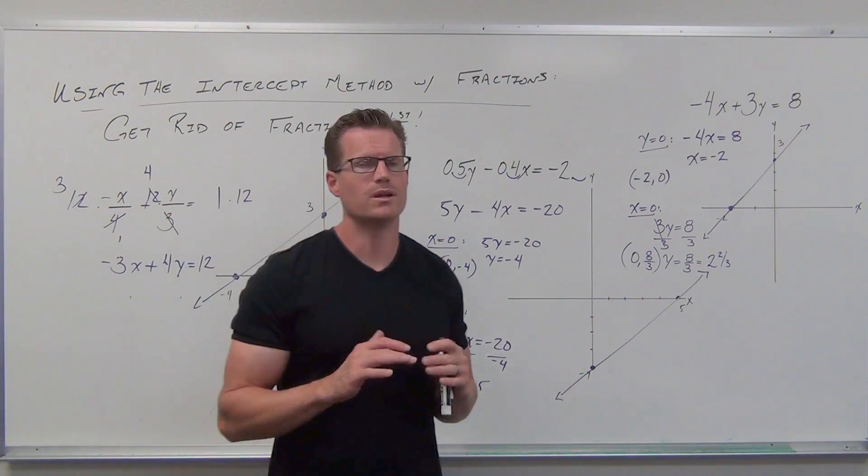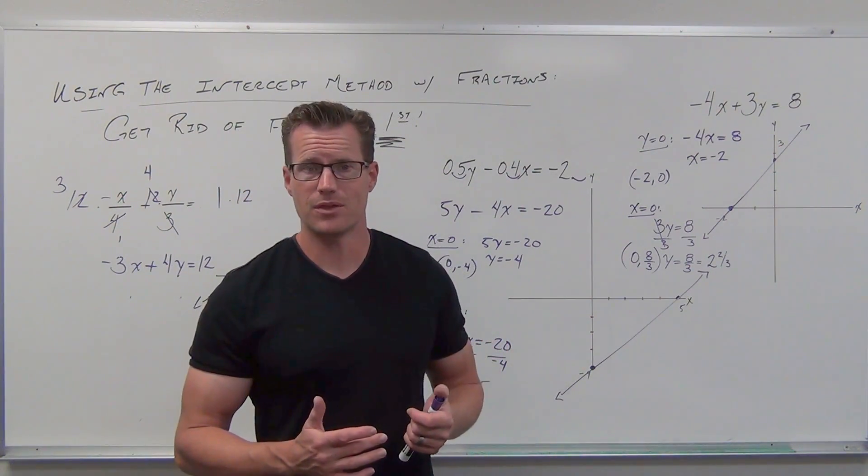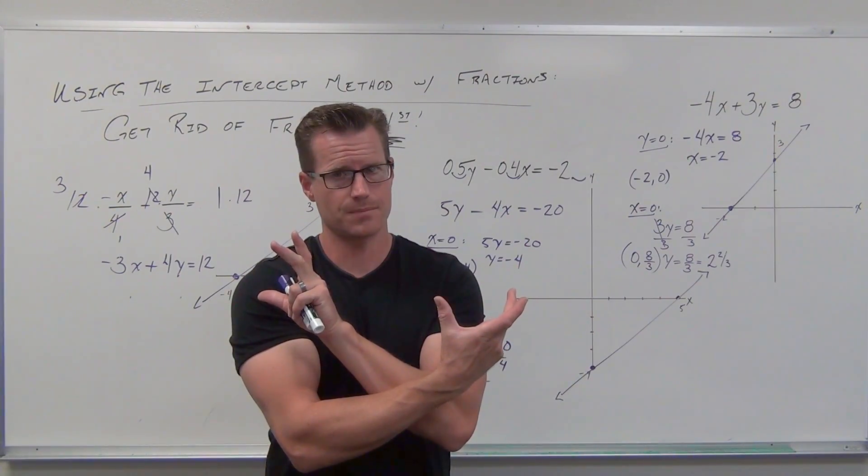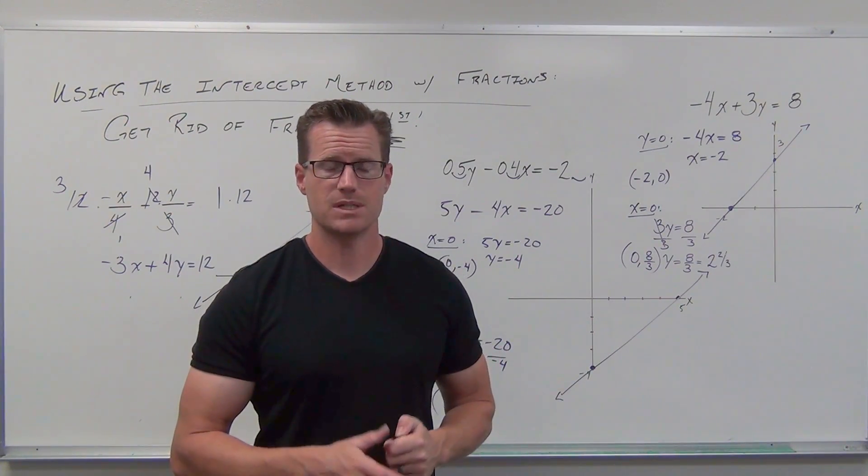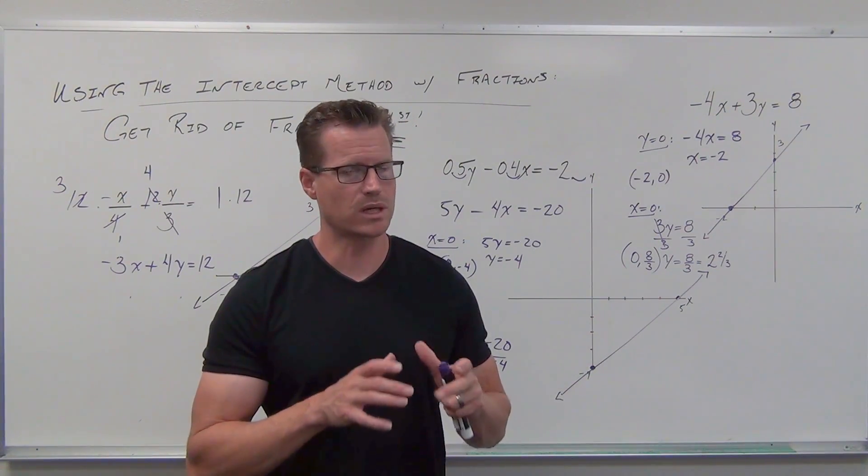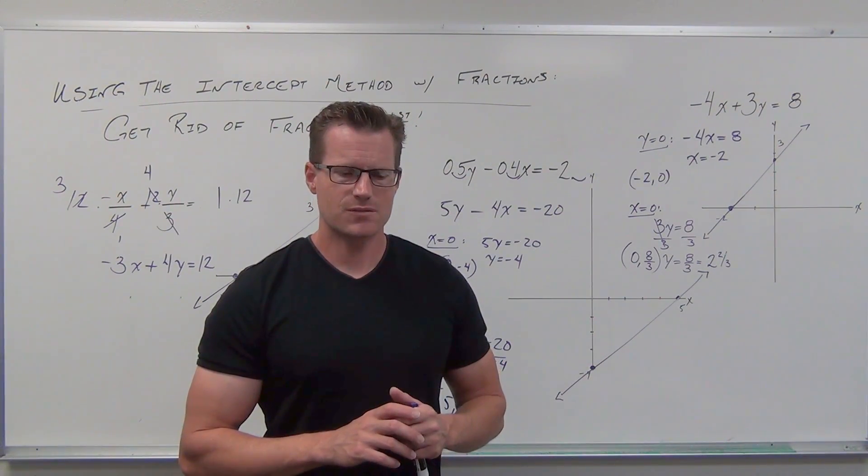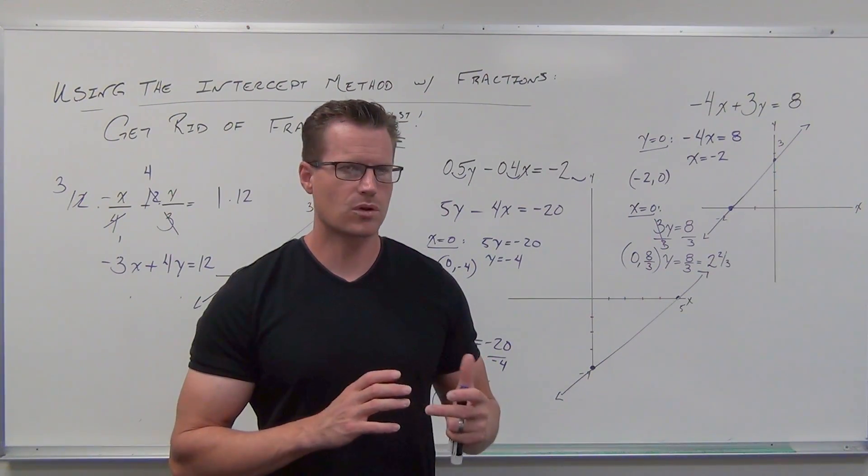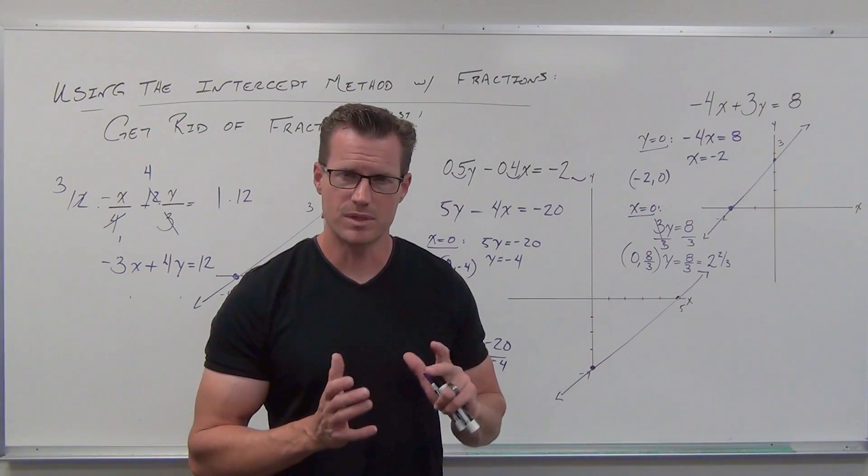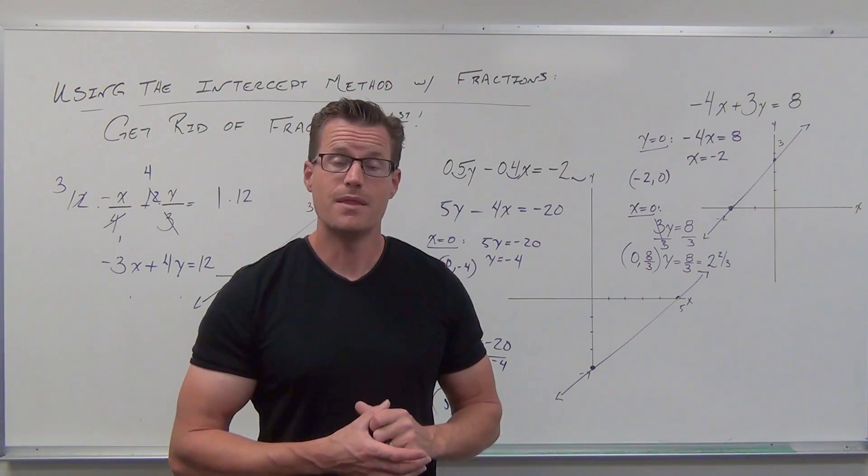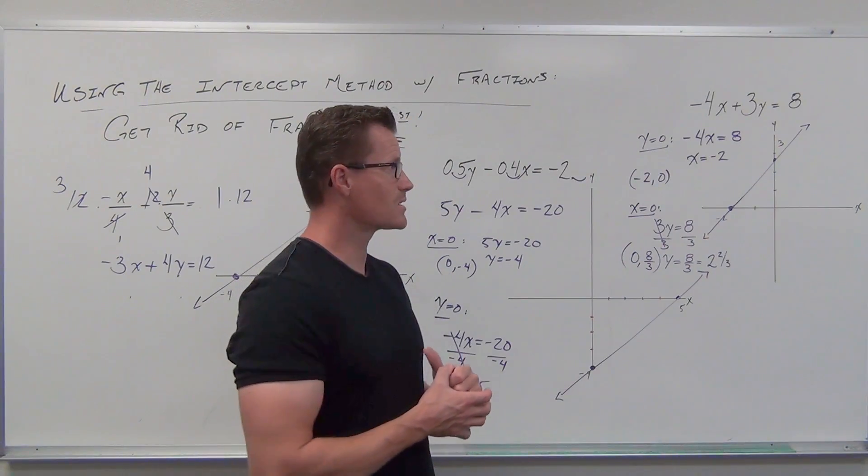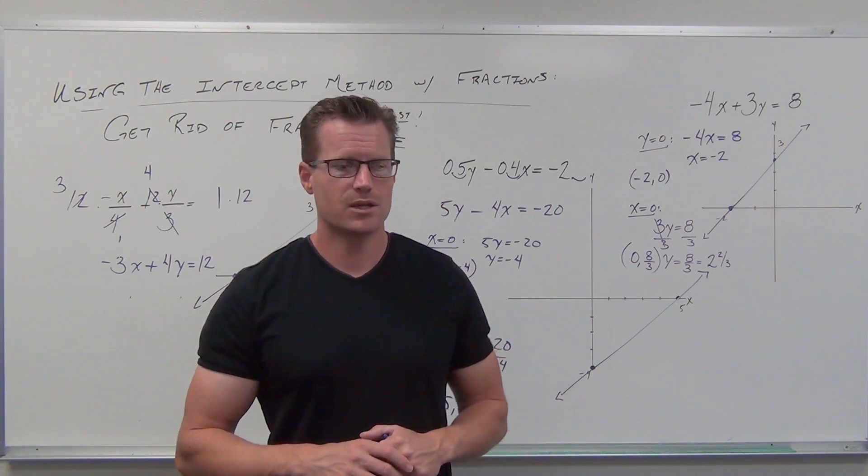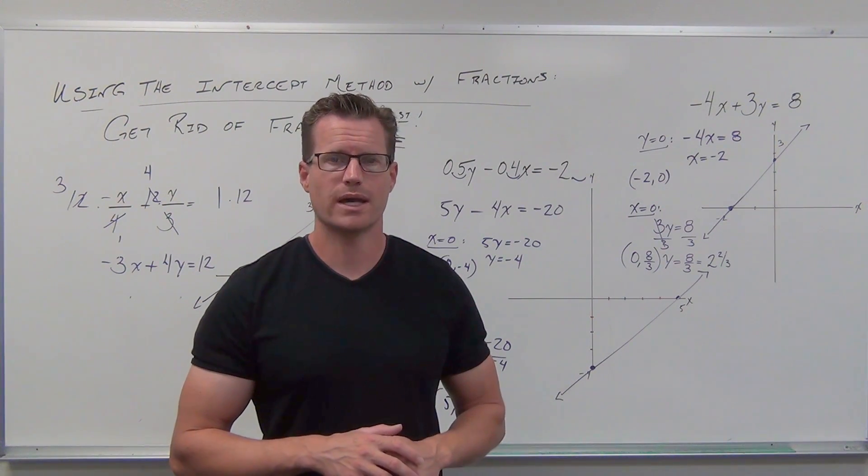I hope that at this point, you're feeling really good about using the intercept method when your variables are on one side and you have a non-zero constant on the other. That's when I want you to use it to give great, accurate, effective, quick graphs. Next video, we're going to talk about a little sidestep. We're going to talk about horizontal and vertical lines, parallel and perpendicular lines to horizontals and verticals, what that means. Then we'll get to move on to slope and really talk specifically about slope, how to find it all the time. It's going to be kind of fun. So I'll see you for the next video on horizontal and vertical lines.